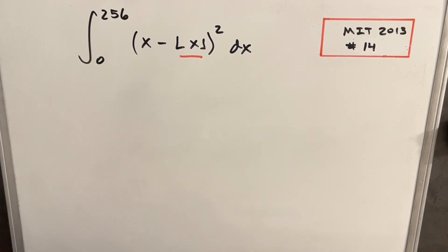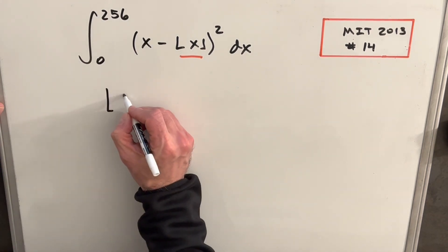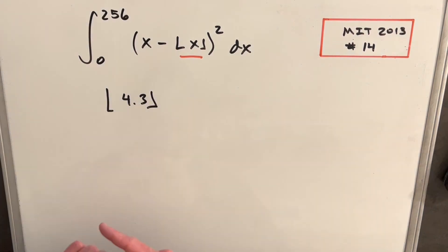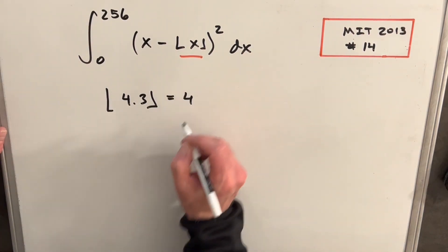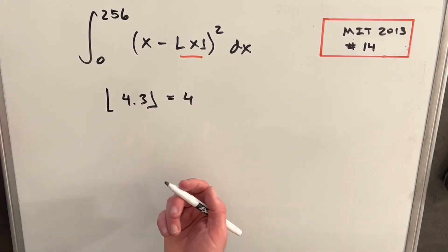First, quick review of how the floor function works. If we were looking at the floor of something like 4.3, this is going to be 4 because it takes you down to the next lowest integer.